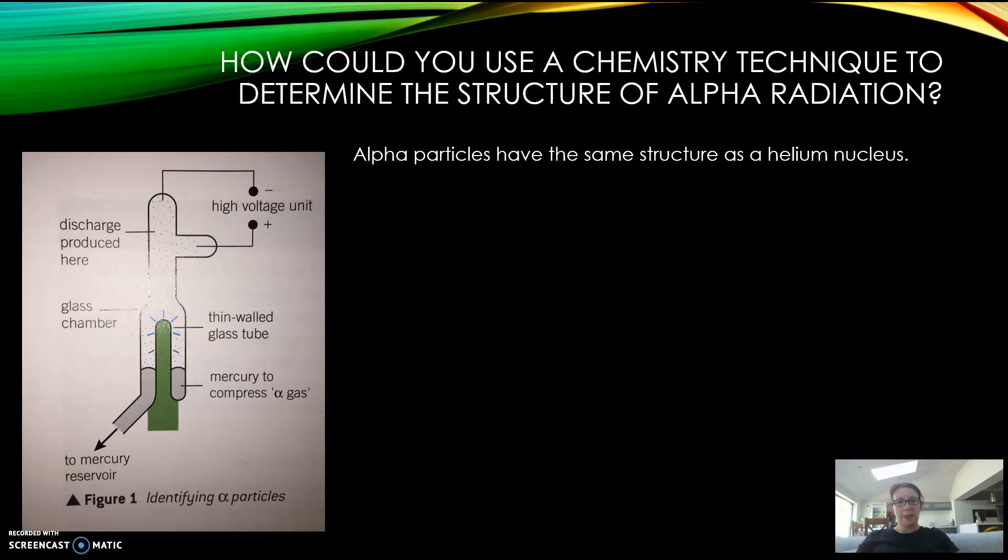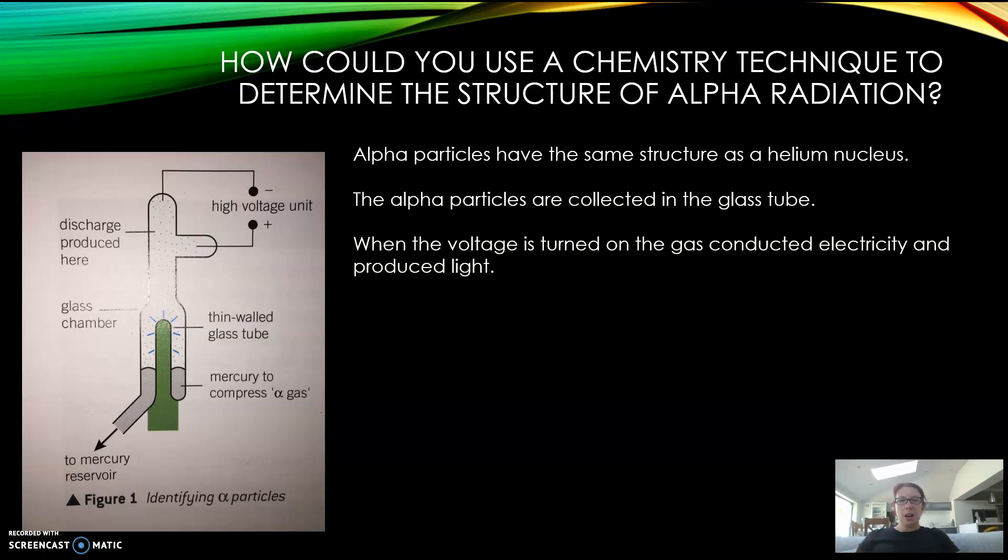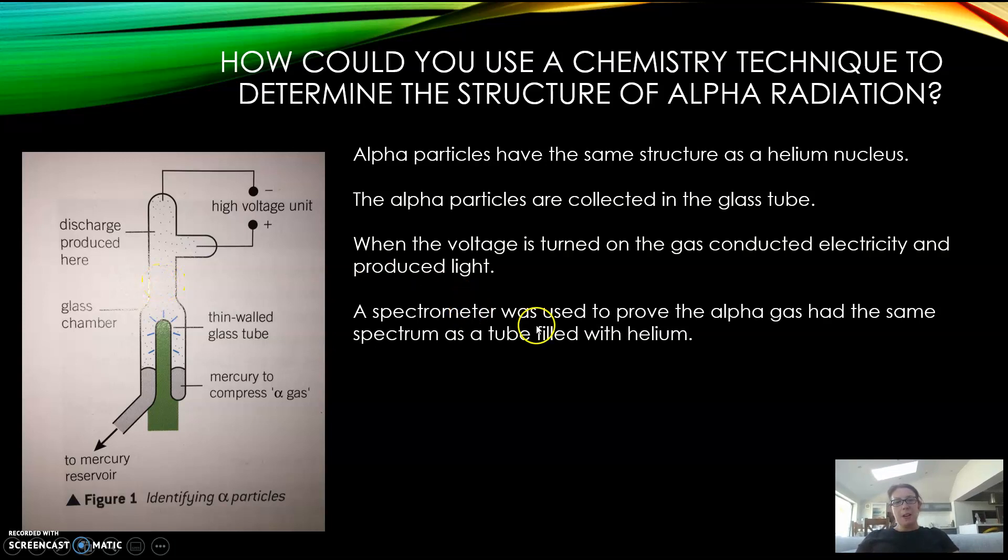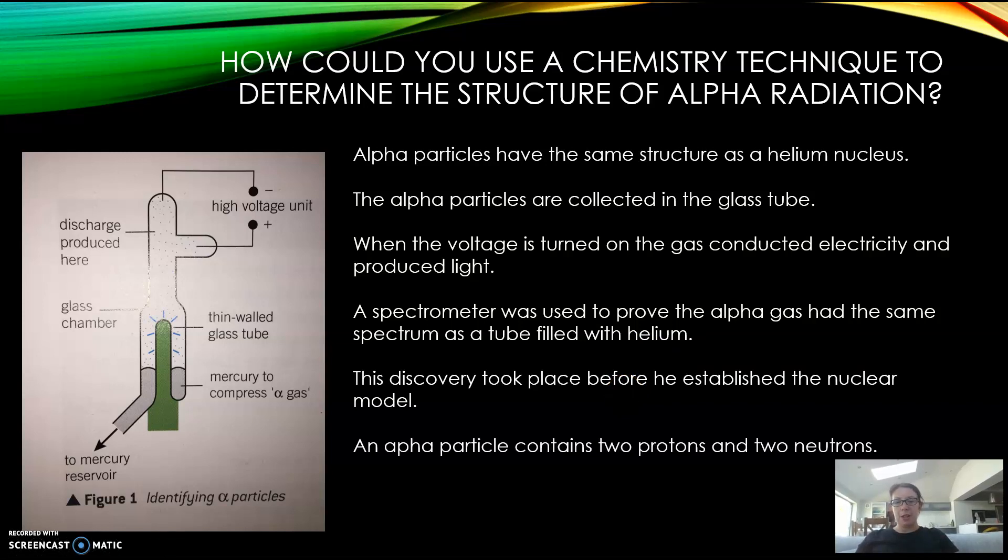Alpha particles have the same structure as a helium nucleus. The alpha particles are collected in the gas tube, then voltage is turned on and the gas conducts electricity producing light. You can use a spectrometer, and that spectrum can be used to prove that alpha gas has the same spectrum as helium. This discovery took place before the nuclear model was established, and after that we knew that an alpha particle contains two protons and two neutrons.